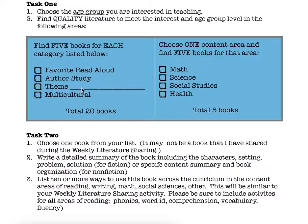Then you're going to pick a theme. In the example I use for my curriculum alignment project, my theme is zoo. So if I were doing my book list project, I could use zoo and choose five books relevant to that theme. You can pick any theme that's appropriate for the age of learner you're working with. The fourth category is multicultural — we want you looking at books that reflect the diversity of the students in your classroom, and picking five books that are multicultural.